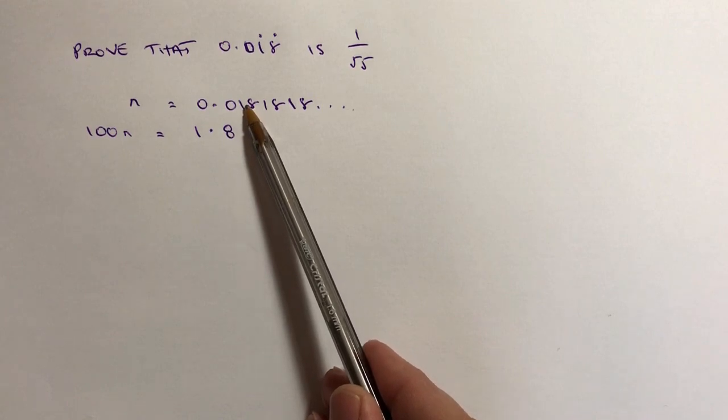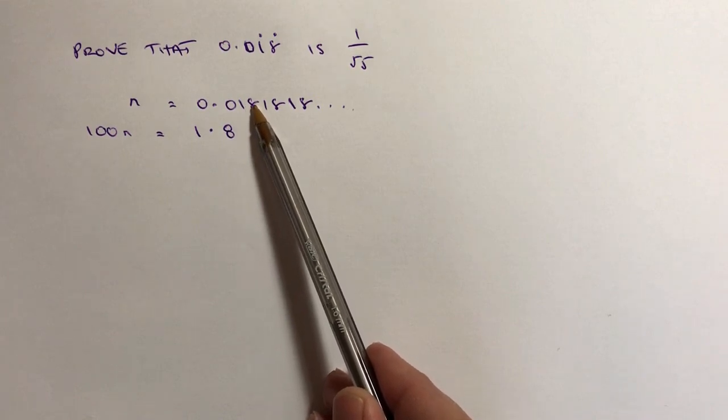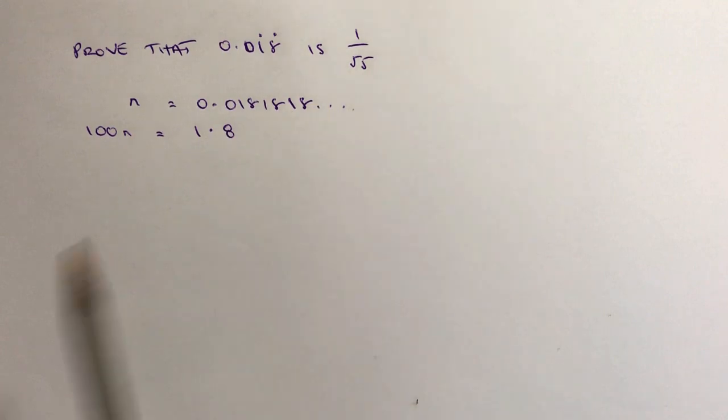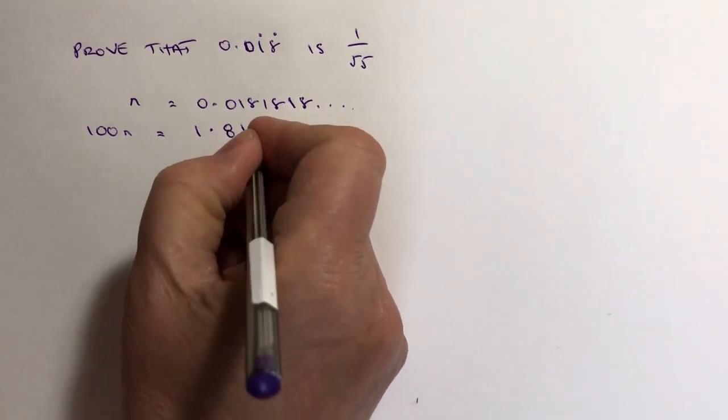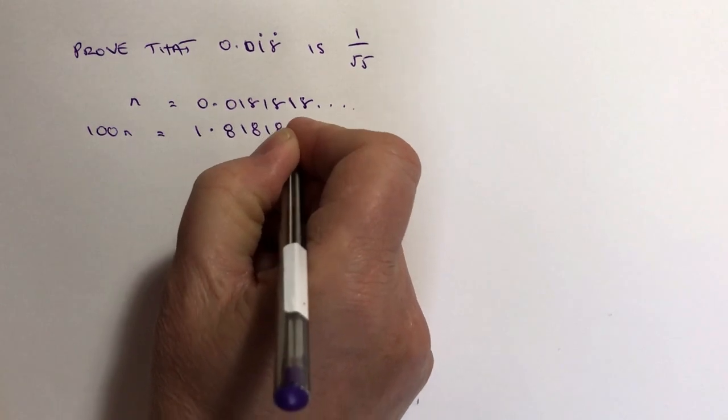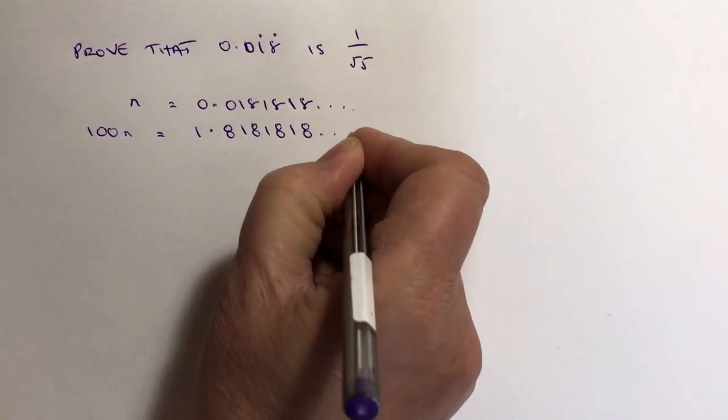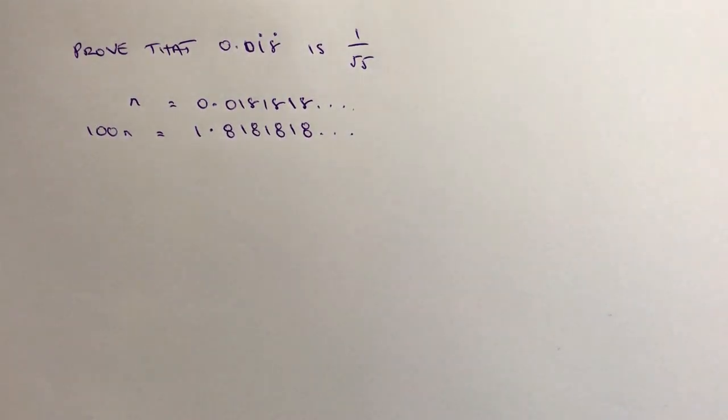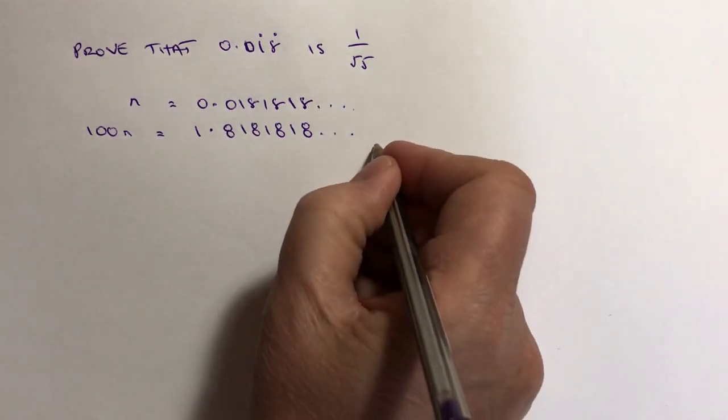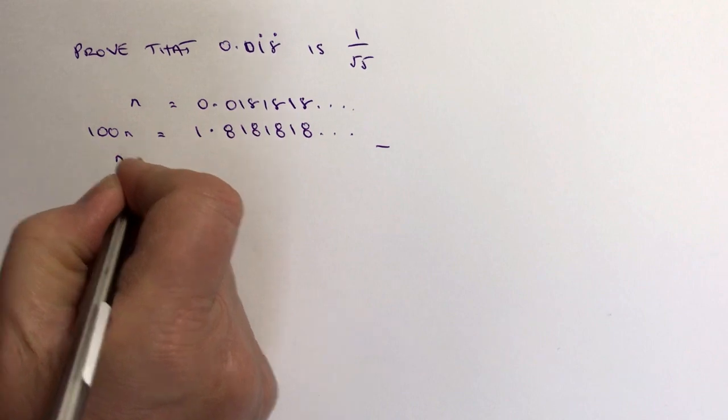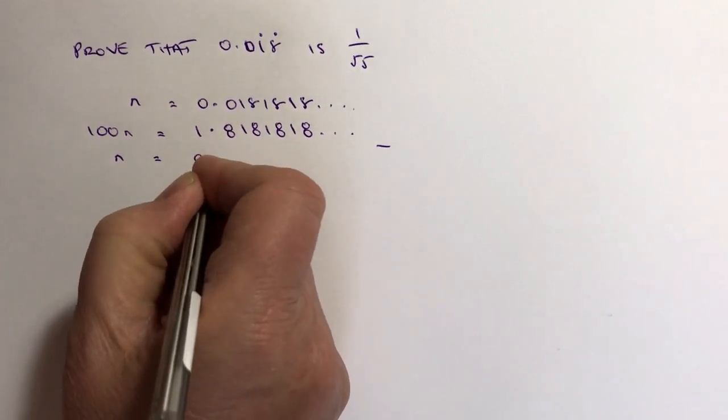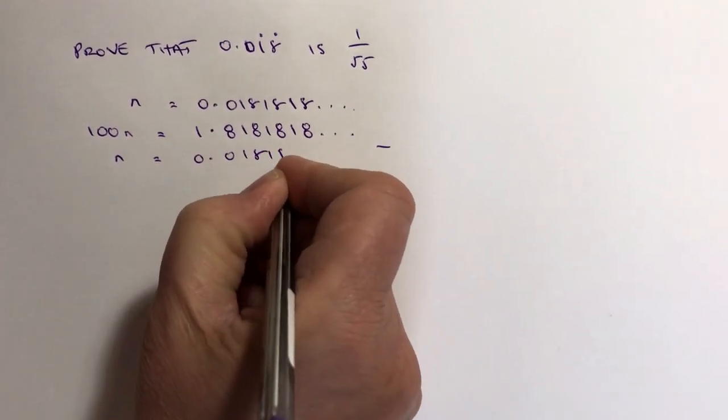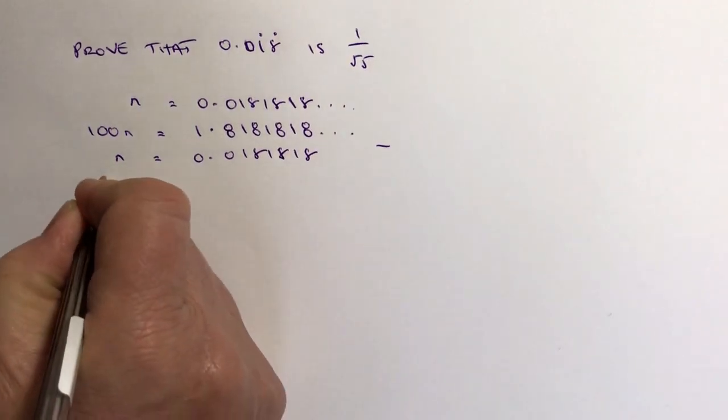If I multiply by 100, I move the decimal point two places—it becomes 1.8 and then I have the 1818. You'll see that it's directly underneath the values of n above, which means that if I take one away from the other, I can lose this recurring part of it.